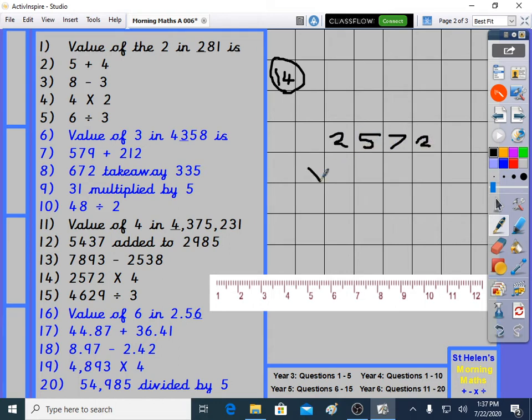And we go on to question 14. 2,572 times 4. 4 times 2 is 8. 4 times 7 is 28. 4 times 5 is 20, plus 2 is 22. 4 times 2 is 8, plus 2 is 10. 10,288 is our answer. Commas go 3 from the end. 10,288.